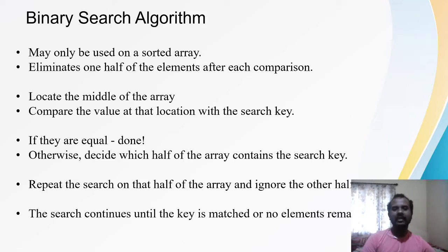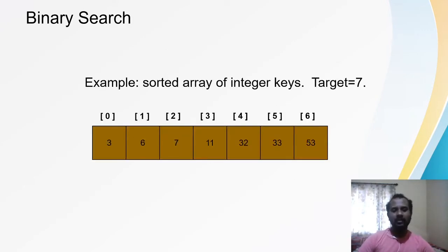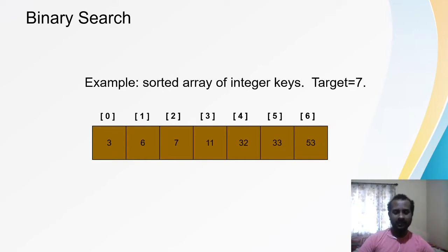Let us look at an example. I have a sorted array with seven elements; the index goes from 0 to 6, and the elements are 3, 6, 7, 11, 32, 33, and 53. Binary search is only applicable when you have a sorted array. Let us say I want to find the target or search element, which is 7.